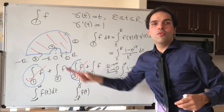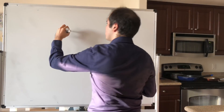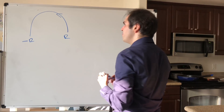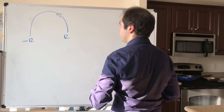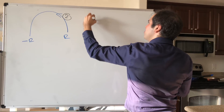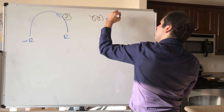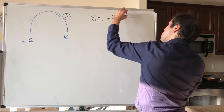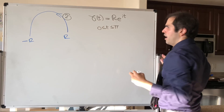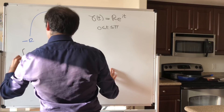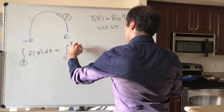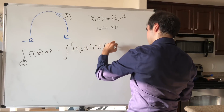Now let's focus on the big circle, which is part two — it's a circle from minus R to R. Let's parametrize this: gamma of t equals R e to the it, where t goes from zero to pi. Therefore, the second integral becomes the integral from zero to pi of f of gamma(t) times gamma prime(t) dt.